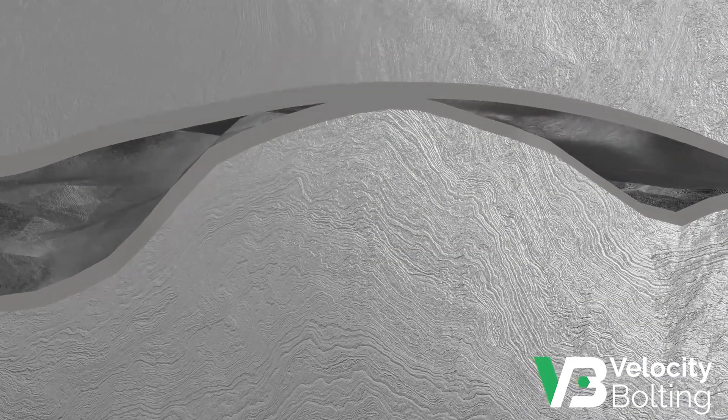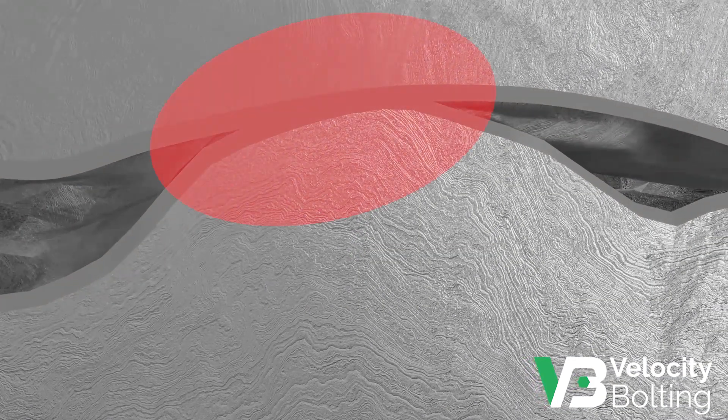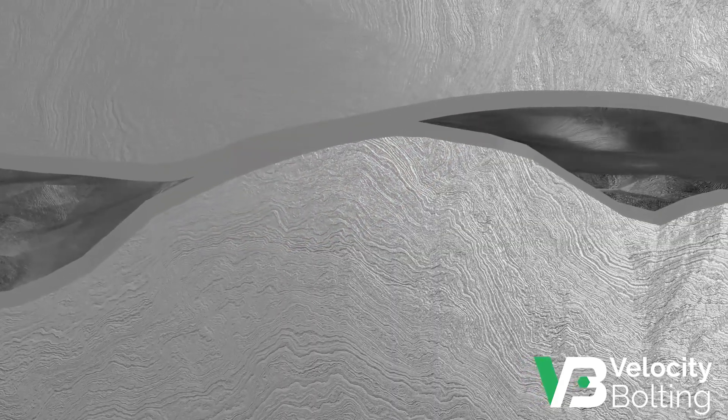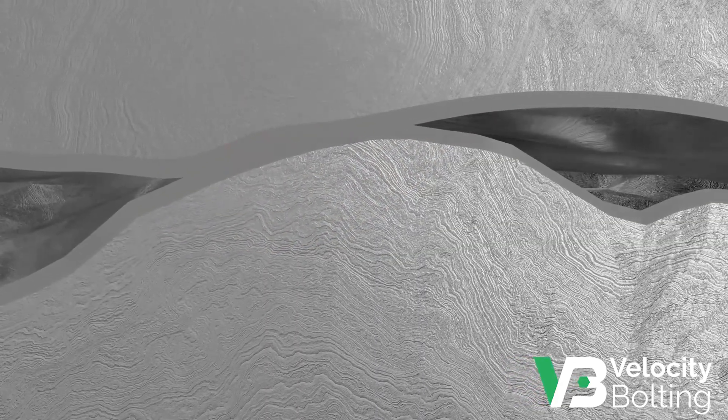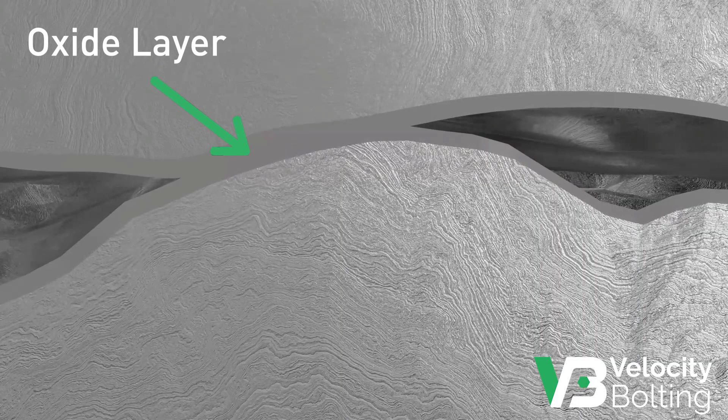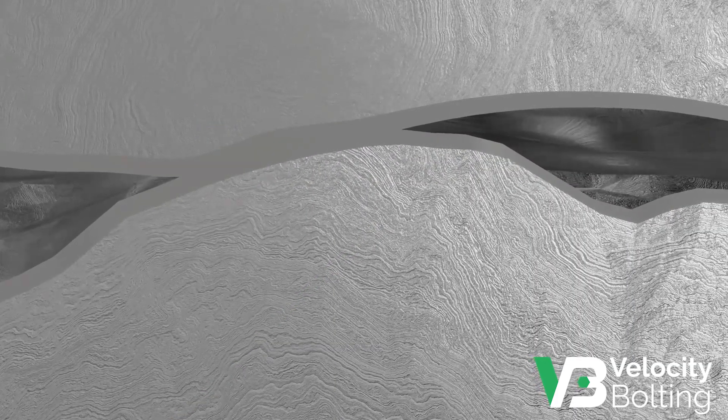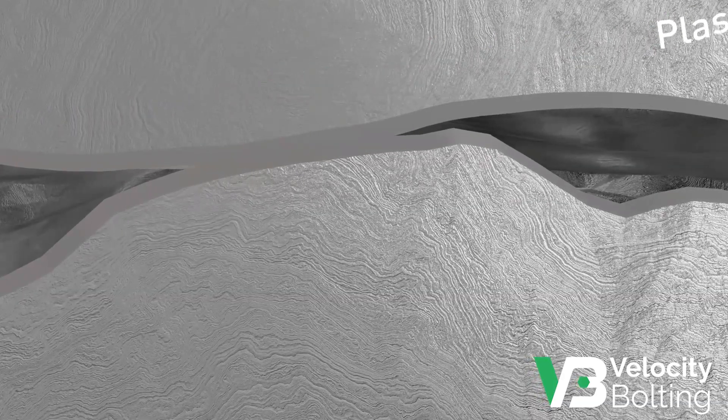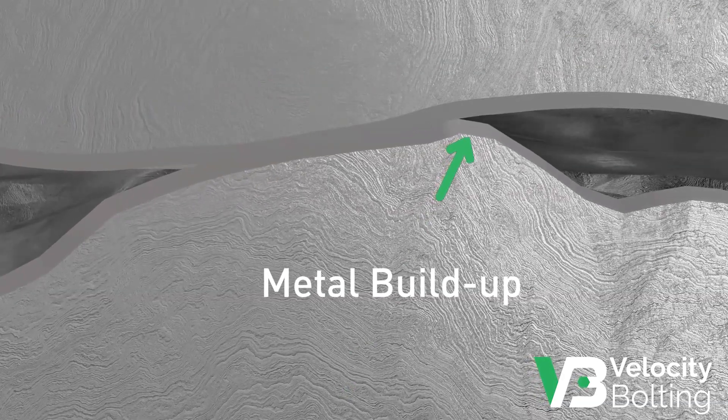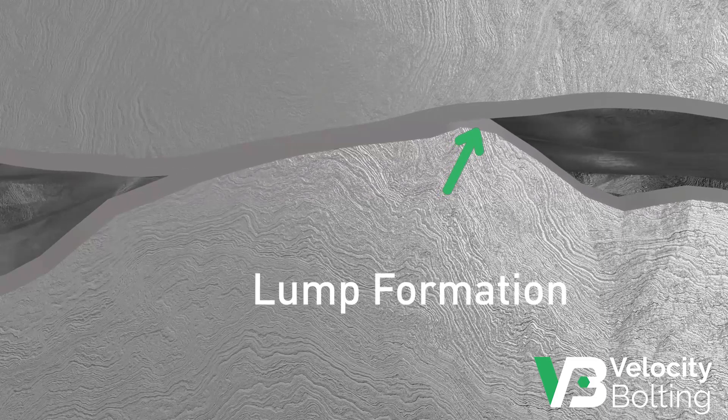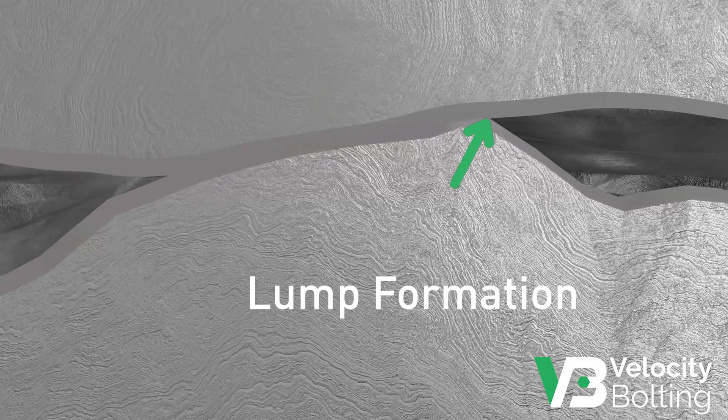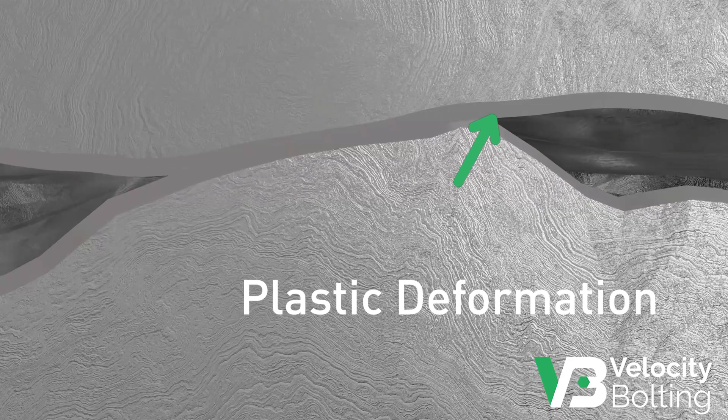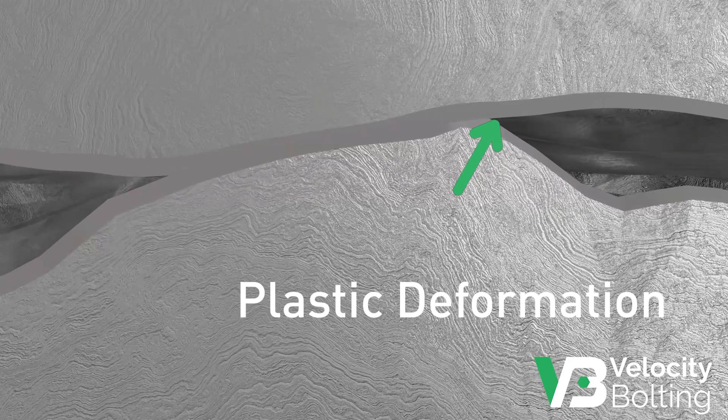This stress exceeds the strength of the opposing material, allowing the asperities to break through the protective oxide layer to the bulk metal underneath. As the two parts continue to move, material must plastically flow around the asperity. Metal builds up at the penetration site, thereby forming a lump and increasing the rate of plastic deformation.